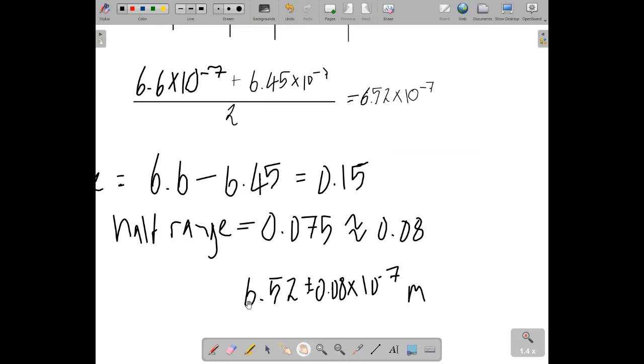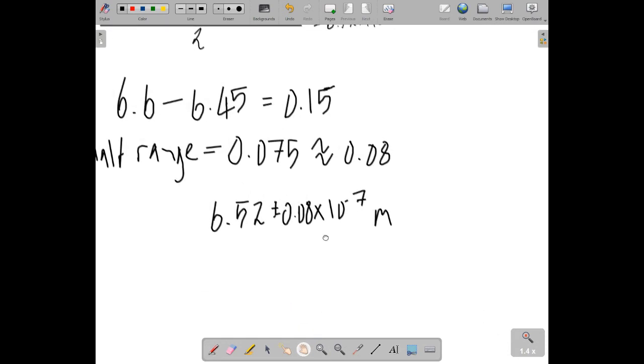So that's saying that my value could go up to 6.7, or it could go down to 6.44. So that's 6.52 plus or minus 0.08 times 10 to the minus 7 metres. Or, if you want to put it in the slightly more scientific form, or more common form, 652 nanometres, which is about the wavelength of red light.